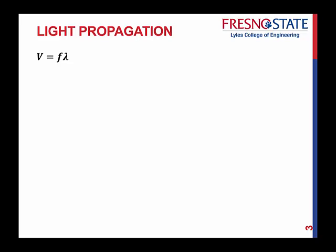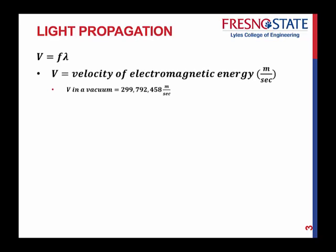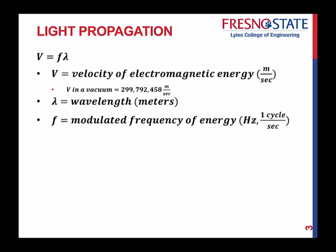So we have V equals F times lambda, which you should be familiar with to know that V is the velocity of electromagnetic energy, measured in meters per second. We have V in a vacuum, that's speed of light. Wavelength, we'll measure that one in meters. That's just the nature of the wave. The distance from this point to the point where it repeats represents your wavelength. And F, that is your frequency. It's your modulated frequency of energy, measured in Hertz. Hertz is measured as one cycle per second. Or if you're talking a nice little wave right here, it's one cycle from here to where you start again.